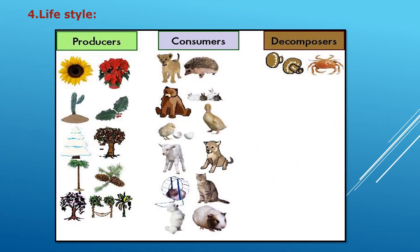The fourth criterion was lifestyle. Plants prepare their own food using sunlight, so they are producers. Animals depend on other plants or animals for food, so they are consumers. After organisms die, decomposition occurs and some organisms like fungi depend on dead organisms — these are decomposers. According to lifestyle, living organisms are divided into producers, consumers, and decomposers.